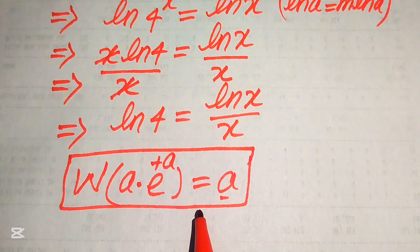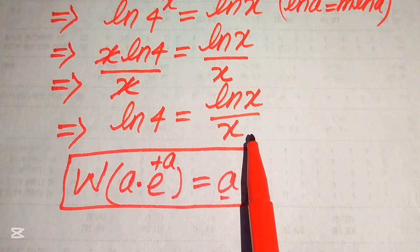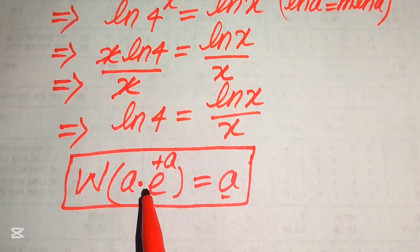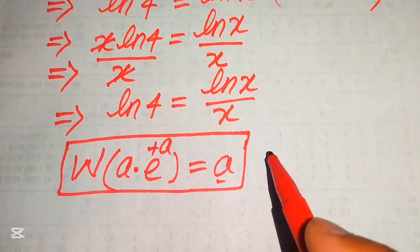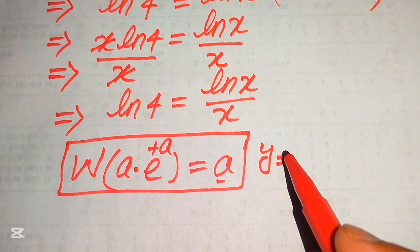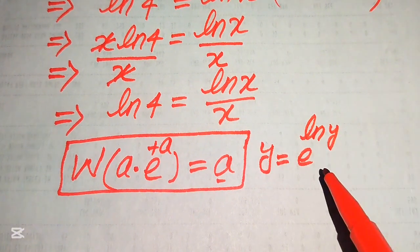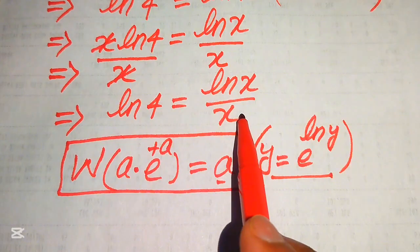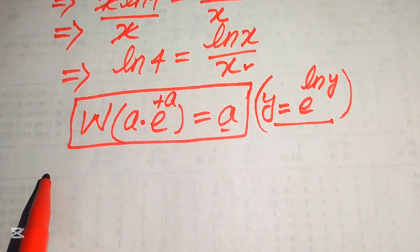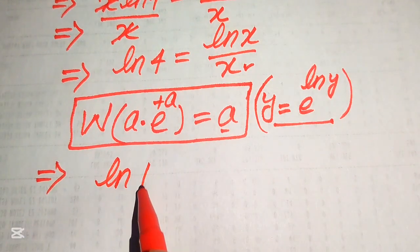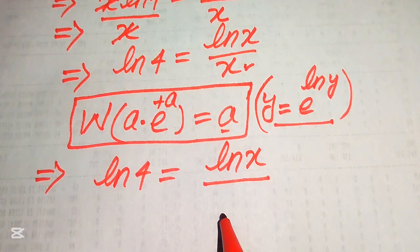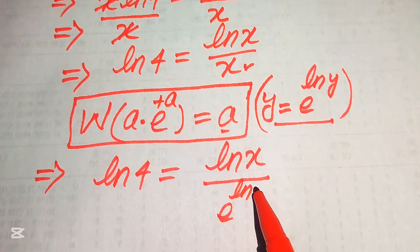According to this function, we need to make the right-hand side match the form a times e to the power of a. We use the identity that any value y can be written as e to the power of log y, since e and log cancel each other. So we rewrite x as e to the power of log x, giving log 4 equals log x divided by e to the power of log x.